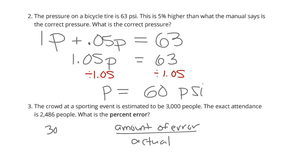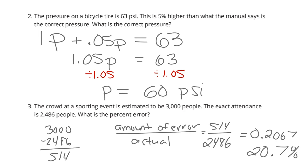Well, the amount of error was 3,000 minus 2,486, which ends up being 514. So, 514 people divided by the actual 2,486. When we divide that, we're going to get a funky decimal. 0.20675, and it keeps going. Get it back into a percent. This is going to be 20.7% error.